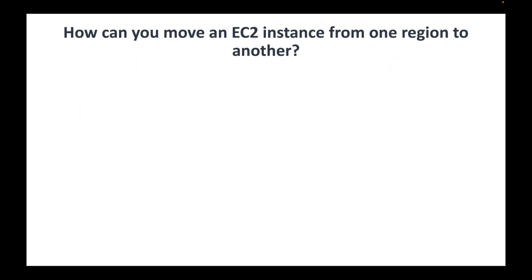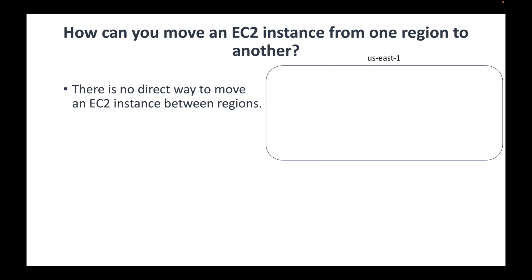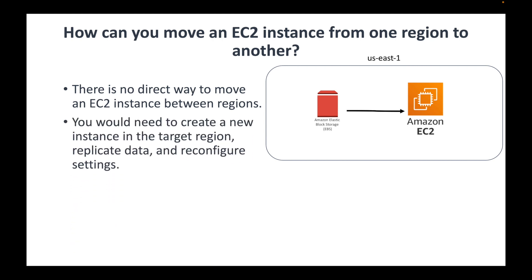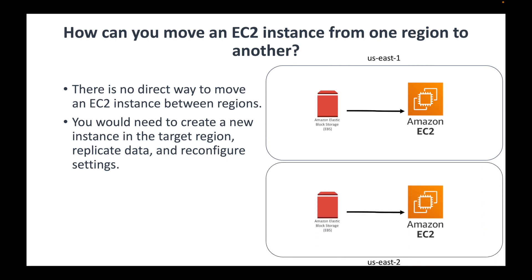The next question is: how can you move an EC2 instance from one region to another? For example, if you have an instance running in us-east-1 with an associated EBS volume, and you want to move it to us-west-1, there is no direct way to move an instance between regions. The workaround is to manually launch a new instance in the target region, copy the EBS volume data over to that region, and reconfigure the settings on the new EC2 instance.